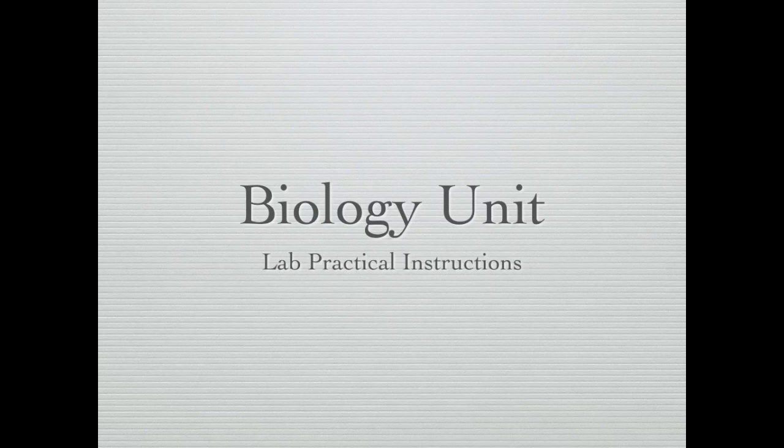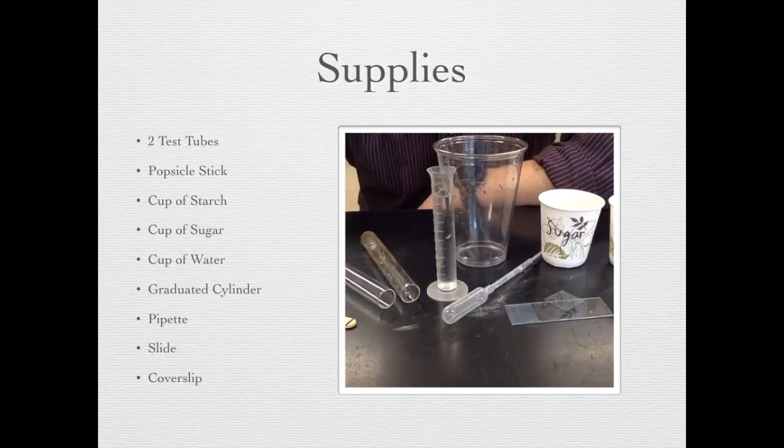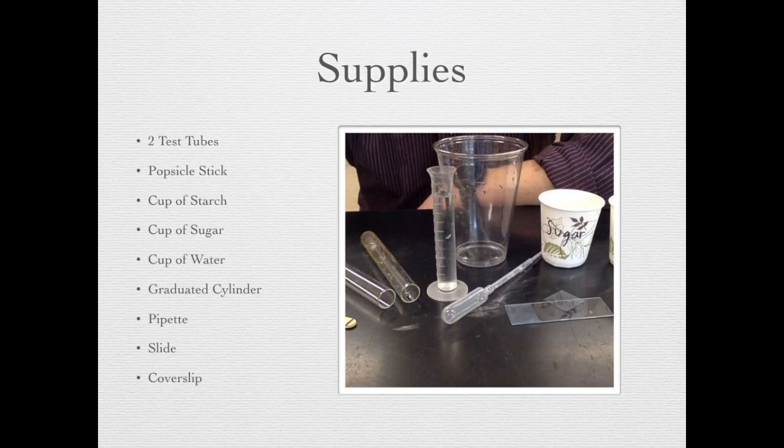Welcome to the Biology Unit Lab Practical. For this activity, you will be given two test tubes, a popsicle stick, a cup of starch, a cup of sugar, a cup of water, a graduated cylinder, a pipette, a slide, and a coverslip.